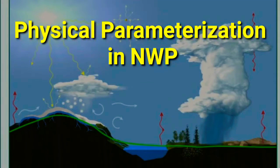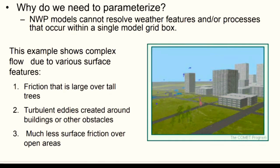Hello students. Today I shall discuss the physical parameterization schemes used in numerical weather prediction (NWP) models. In NWP models we use grid cells to represent mean values of atmospheric parameters. However, some events like atmospheric turbulence or airflow around buildings are much smaller than the grid size, and the model cannot resolve these local flows which are smaller than the grid size. Nevertheless, the model must include the effect of these surfaces on the low-level wind flow.